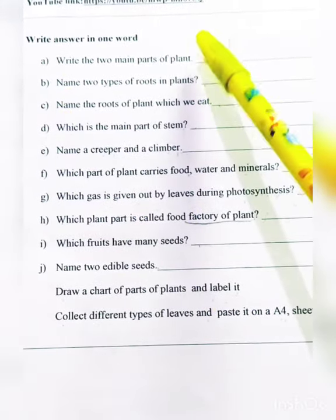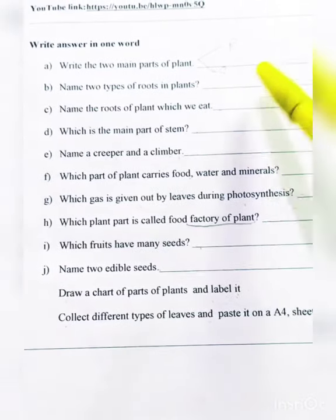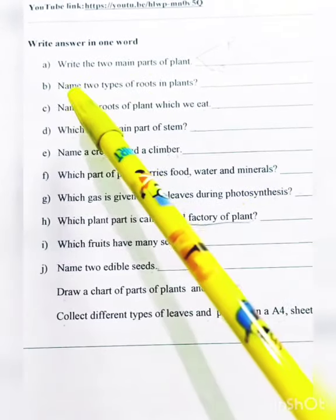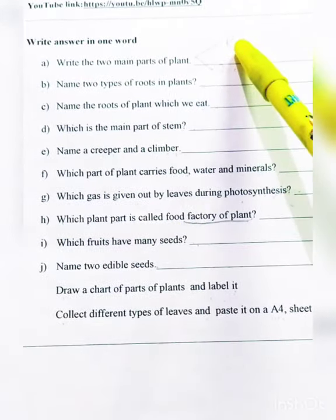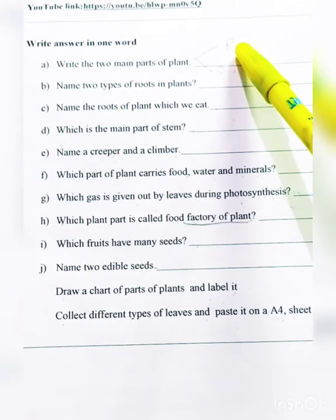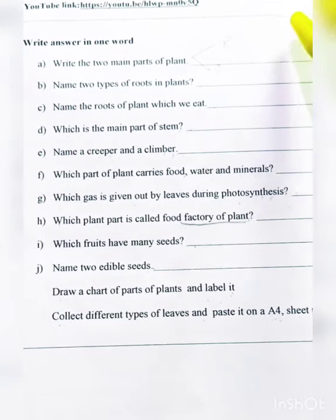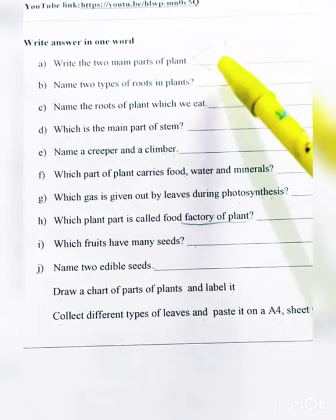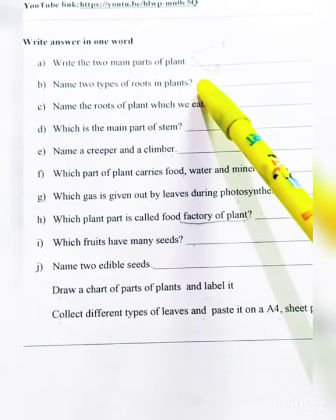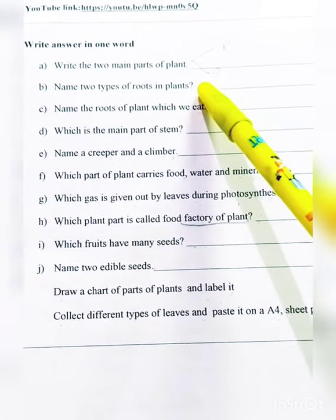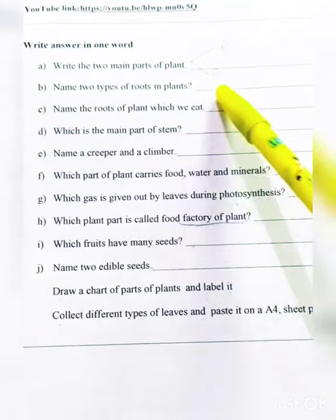The shoot is divided further. Root is the underground part of the plant, and the shoot is the above-ground part. There are two types of roots: fibrous root and tap root.